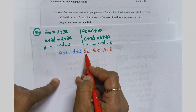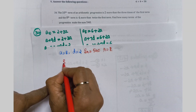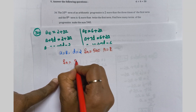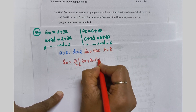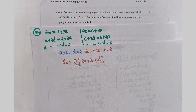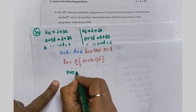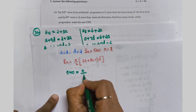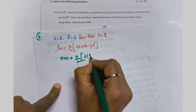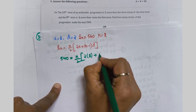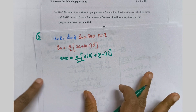You know Sn, a, and d; N is the question mark. Use the Sn formula: Sn = n/2 × (2a + (n−1) × d). Apply the values: 540 = n/2 × (2 × 8 + (n−1) × 2), which gives 540 = n/2 × (16 + 2n − 2).